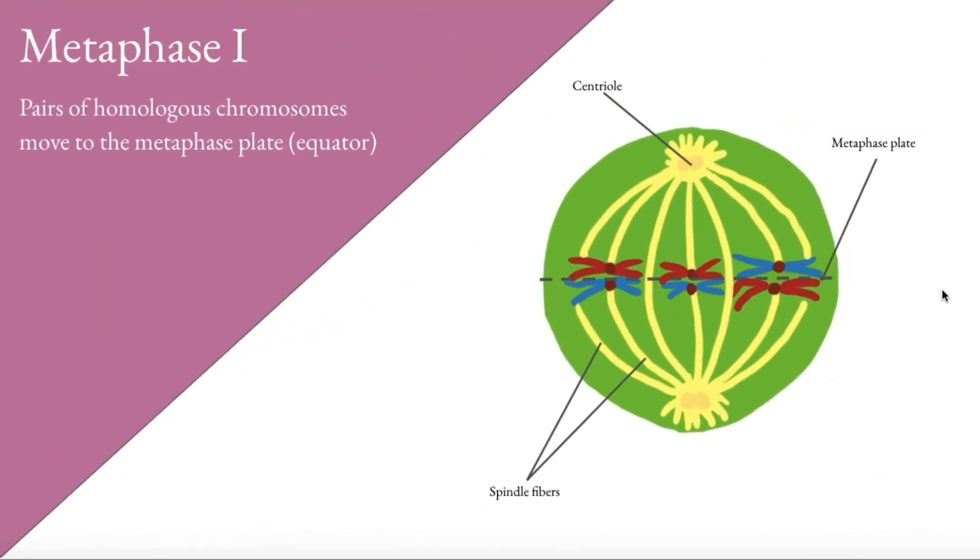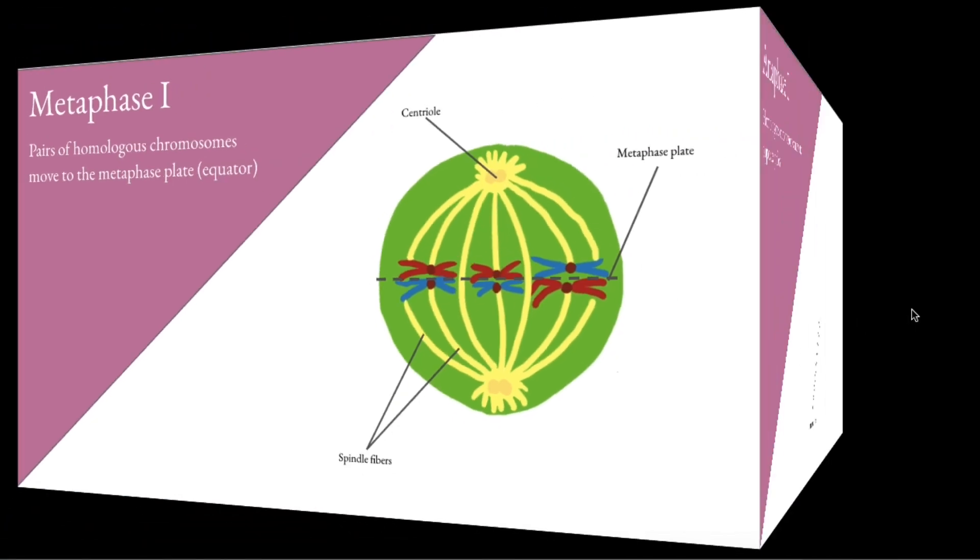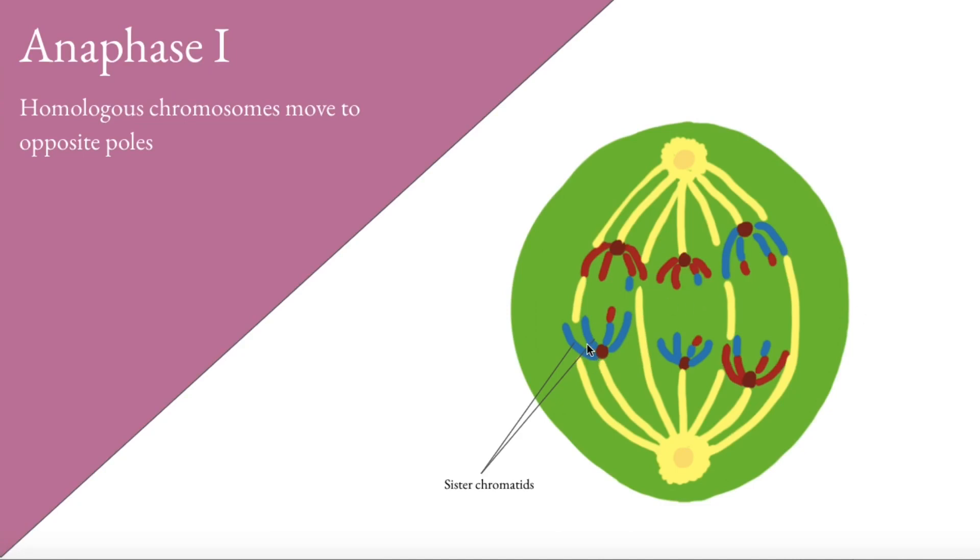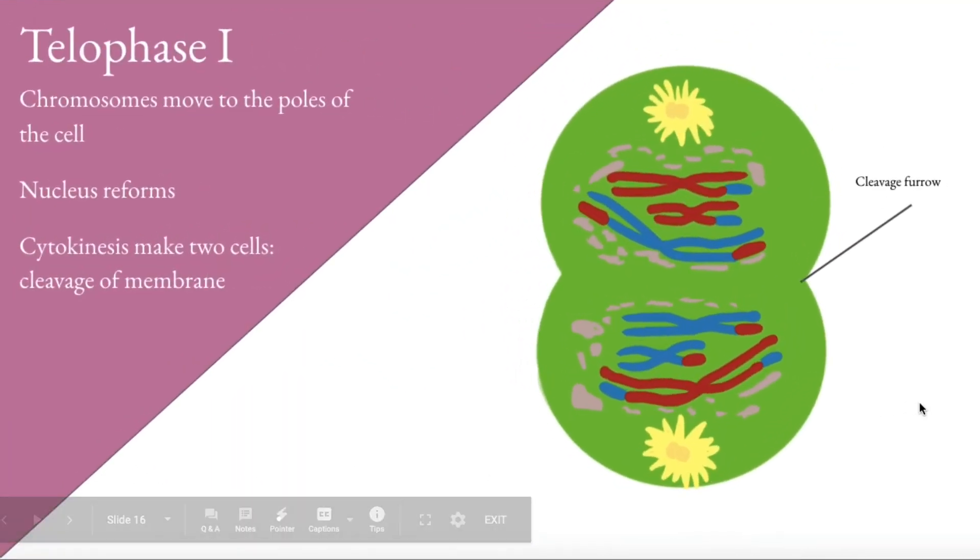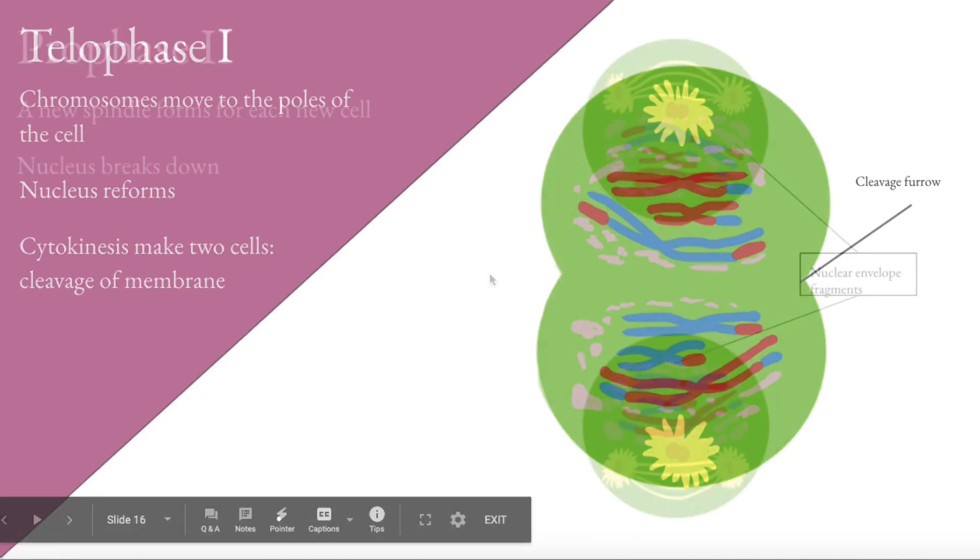After prophase, just like in mitosis, metaphase 1 occurs. They line up on the metaphase plate. The centrioles with the spindle fibers pull them to opposite poles. The sister chromatids, however, are still attached, and they move to the poles. Telophase occurs. The nucleus reforms. Cytokinesis pinches the membrane and makes the two daughter cells, but then we enter the second phase of meiosis.